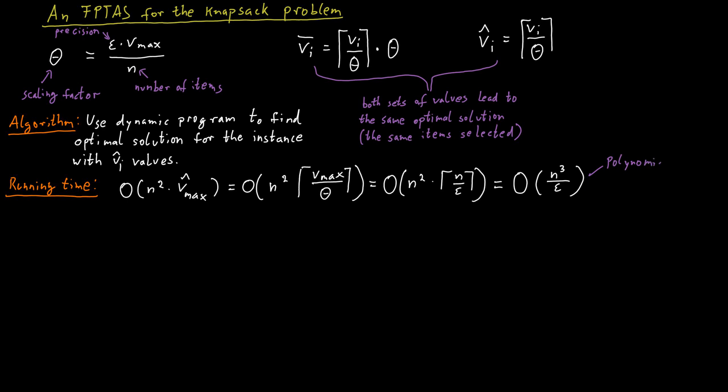n cubed means it's a polynomial function in n, and it's even polynomial in 1 over epsilon. It's in fact linear in 1 over epsilon. Therefore, this is a fully polynomial time approximation scheme. But we still have to show that it actually achieves a 1 plus epsilon approximation. So this is the last step in our argument.